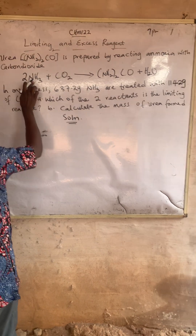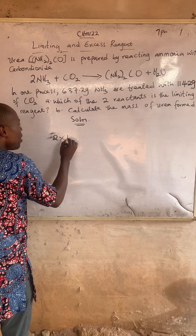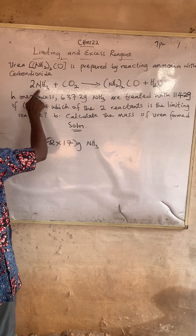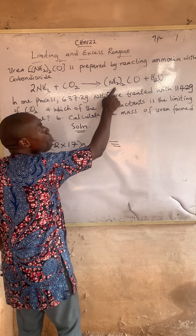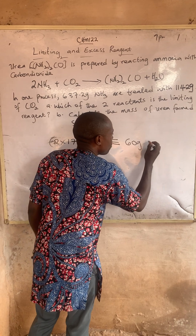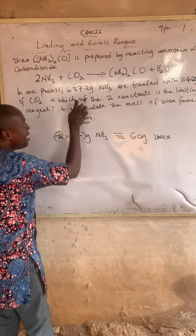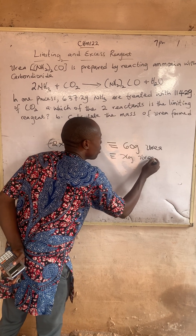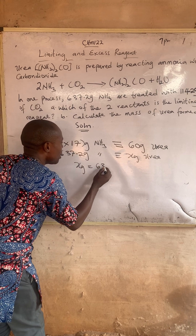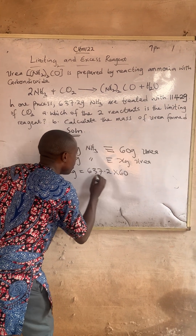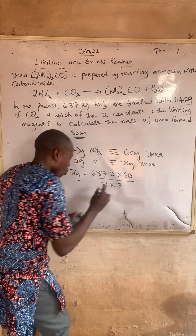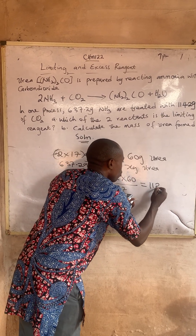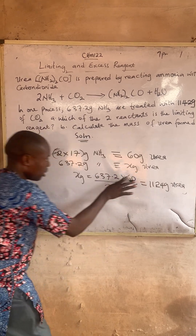For ammonia, it will be 2 multiplied by the molar mass of ammonia, which is 17. Nitrogen is 14, hydrogen is 1 times 3, so altogether it's 17. The molar mass of Urea is 60 grams. The mass of ammonia given is 637.2 grams. So: S grams Urea = 637.2 × 60 ÷ (2 × 17). When you multiply and divide, the answer gives 1124 grams of Urea from ammonia.